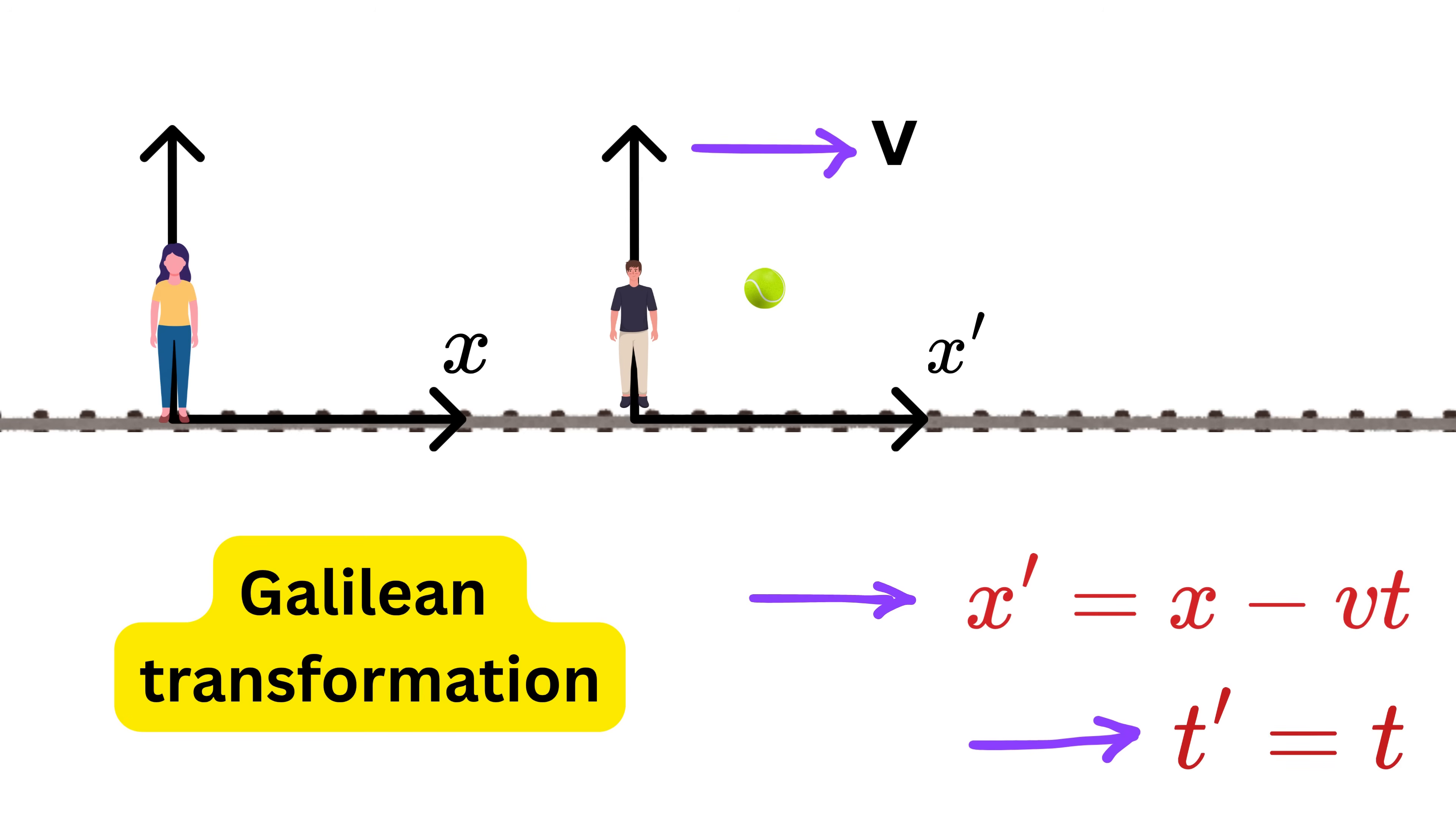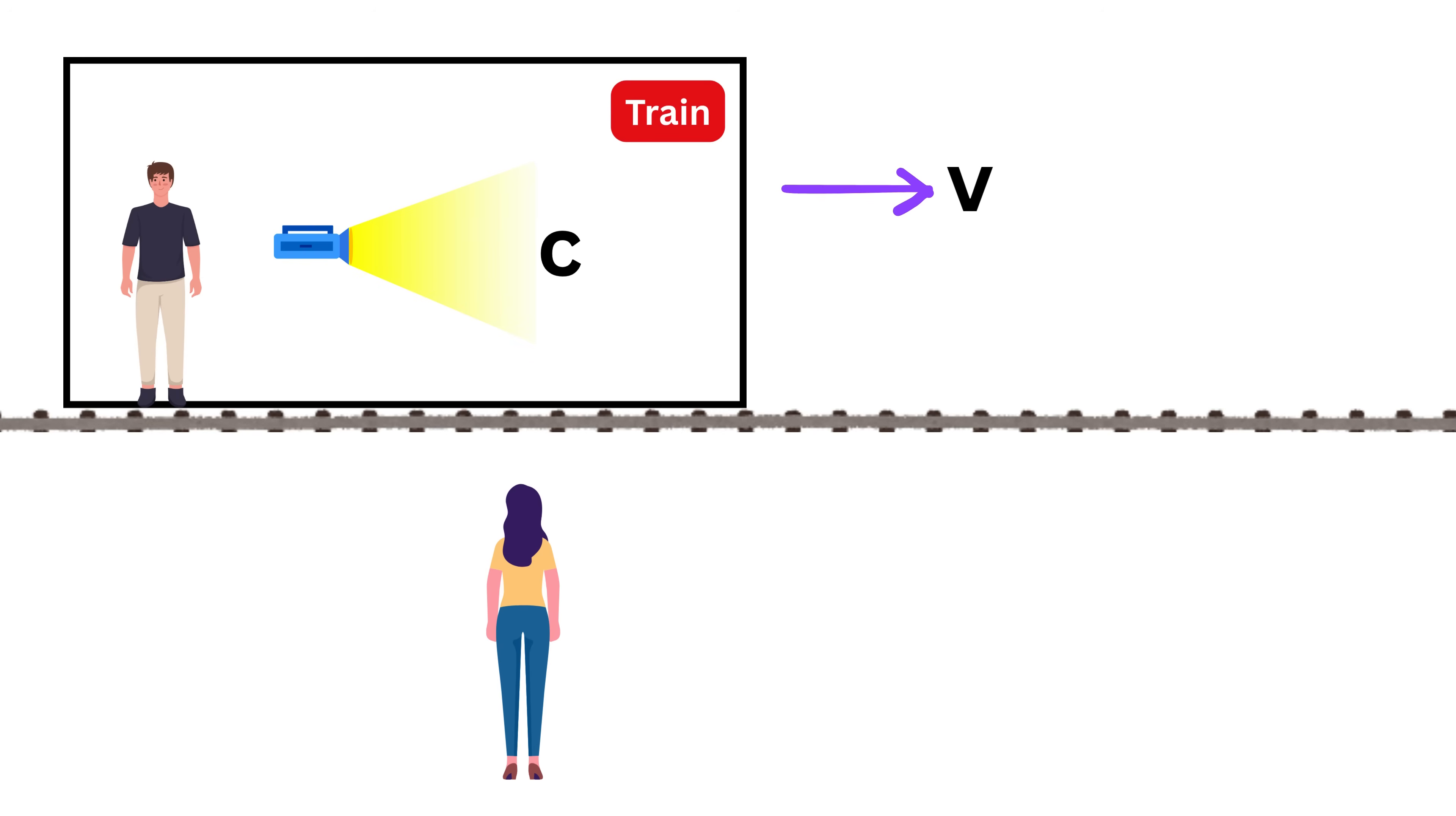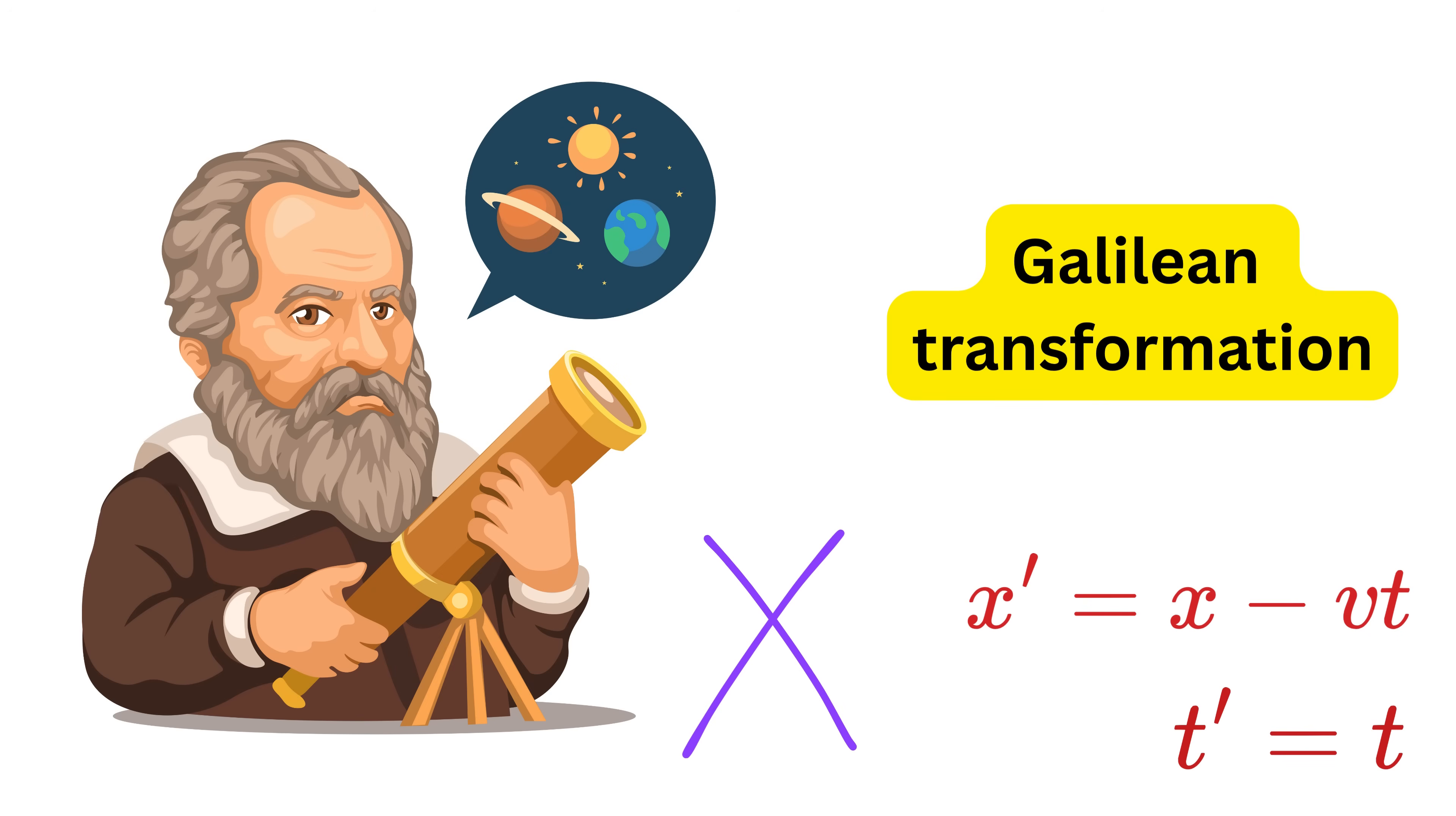Now here comes the real surprise. Scientists started studying how light behaves. They expected that if Bob shines a light inside the train, Alice would see the light moving at the speed of light plus the speed of the train. But experiments showed something shocking. Alice and Bob both see the light moving at the exact same speed.